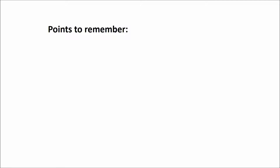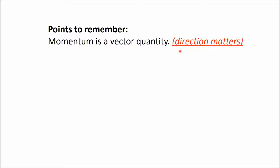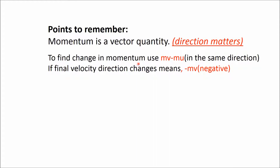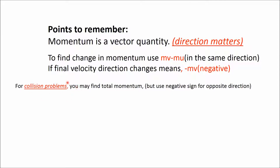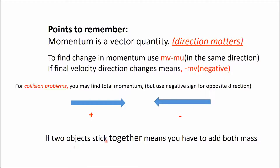Points to remember while dealing with questions from the topic momentum and impulse: momentum is a vector quantity, so direction matters. To find change in momentum use mv minus mu, but be very careful with direction. If the final velocity direction changes, you have to use a negative sign, that is minus mv. For collision problems you may find total momentum, but also use a negative sign for opposite direction. If two objects stick together, you have to add both masses.